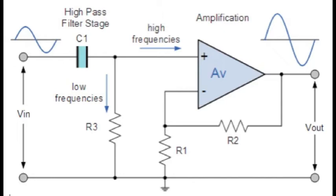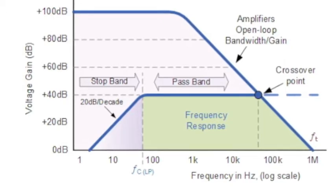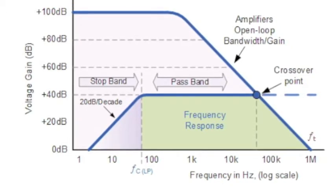Just like the low-pass filter, the operation of a high-pass active filter can be verified from the frequency gain equation. Unlike a passive high-pass filter, an active high-pass filter has a maximum cutoff frequency.